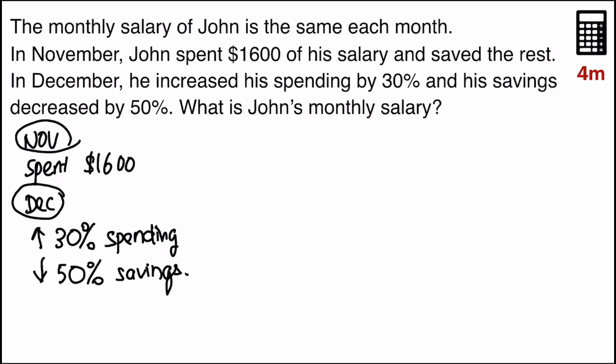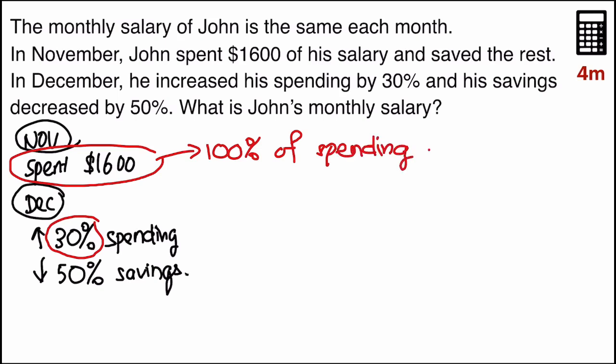To be able to solve this, I know in November he spent this amount. And my next step, I want to find out what is this 30% that he has increased in spending. So, $1,600 is 100% of spending. My first step is to find out this. I will take $1,600 divided by 100 times 30, and I will get $480.